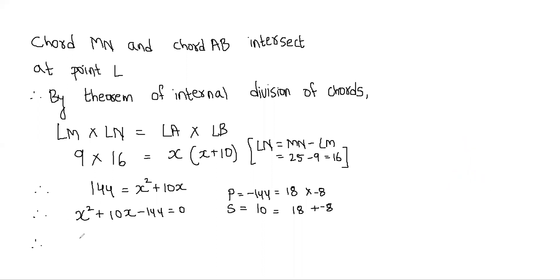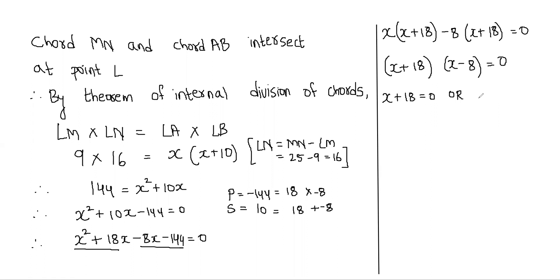Therefore X square plus 18X minus 8X minus 144 is equal to 0. We will take out the common factor. X common, so when we take X common what remains inside: X plus 18. Minus 8 common: X plus 18 equal to 0. Common bracket X plus 18, next bracket X minus 8, equal to 0. Either first bracket is equal to 0 or second bracket is equal to 0. Therefore X is equal to minus 18 or X is equal to plus 8.